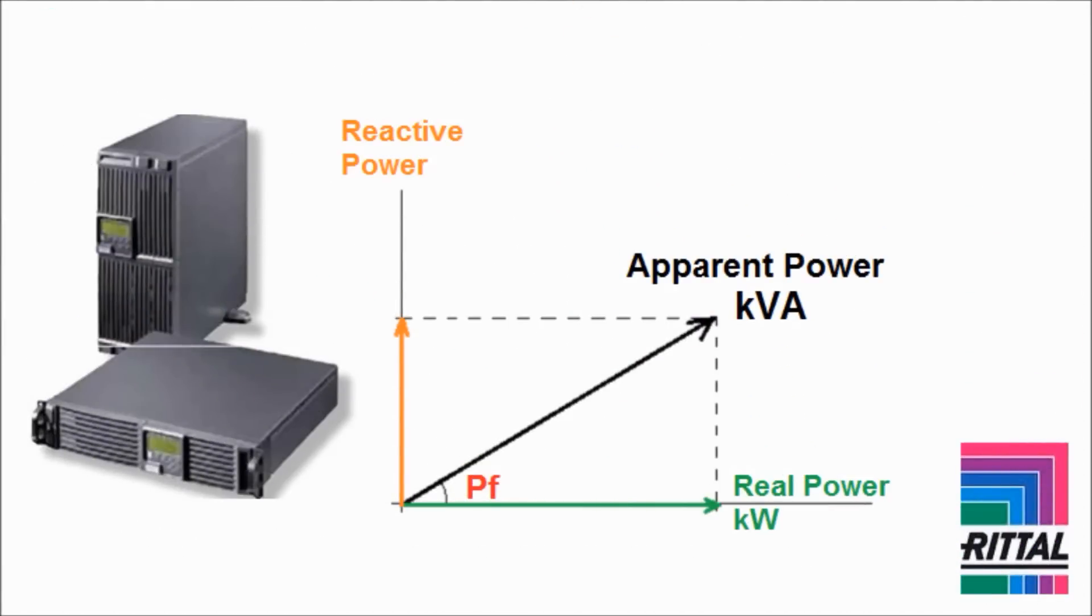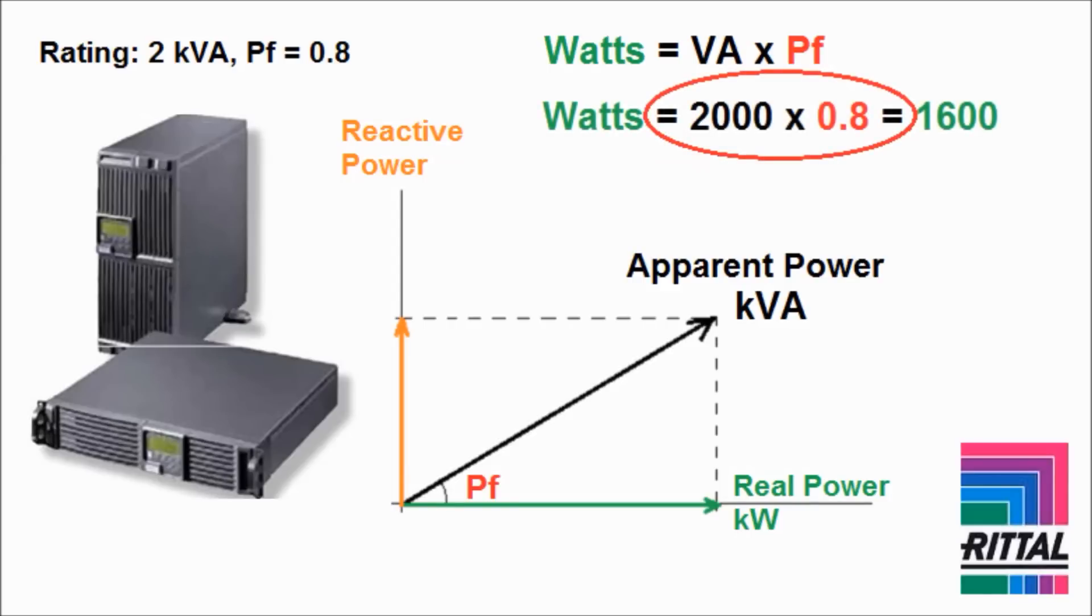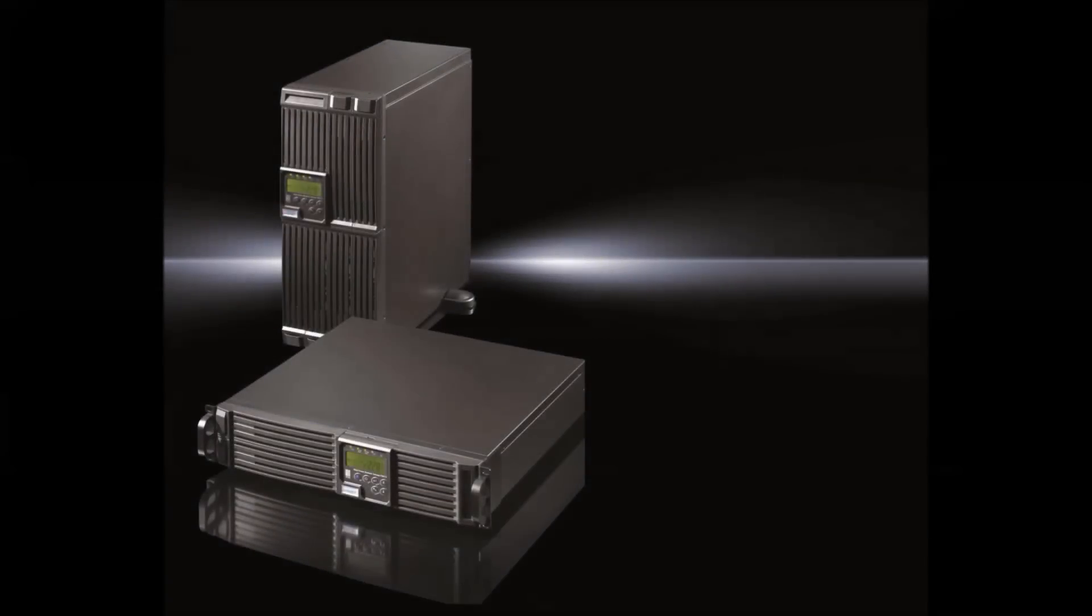Similarly, for a 2 kVA UPS with a power factor of 0.8, the formula reveals that it supports up to 1.6 kW, since 2000 multiplied by 0.8 equals 1600.